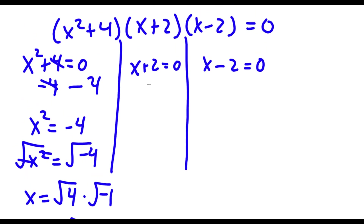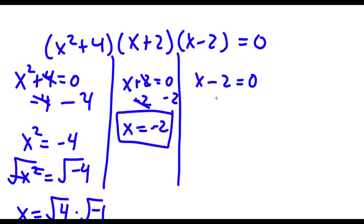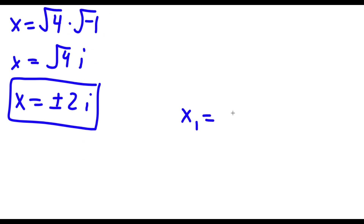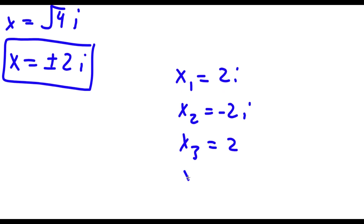For x plus 2 equals 0, I'm going to subtract 2 on both sides, and I'm left with x is equal to negative 2. And for x minus 2 equals 0, I can add 2 on both sides, and I'm left with x equals positive 2. So my four solutions are x is equal to 2i, x is equal to negative 2i, x is equal to 2, and x is equal to negative 2.